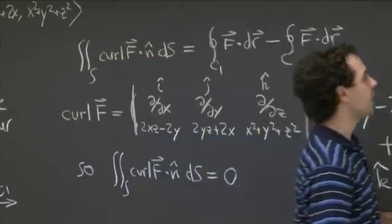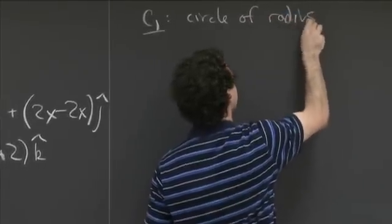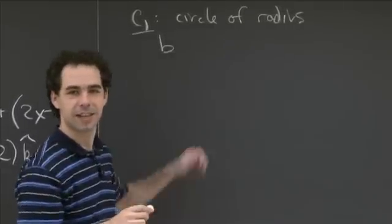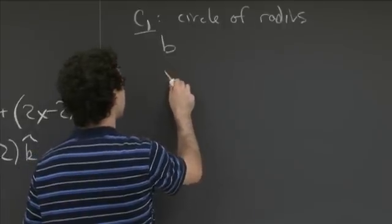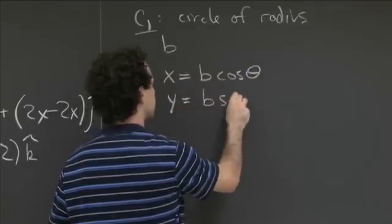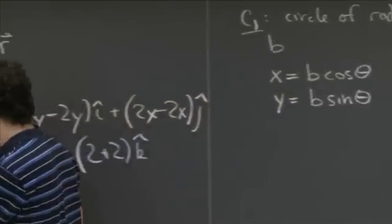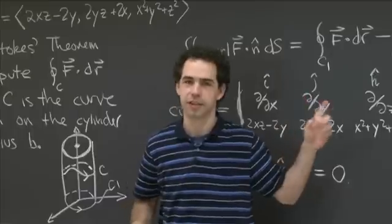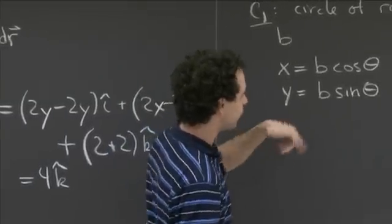c1 is the circle of radius b centered at the origin in the xy plane. It's parametrized by x equals b cosine theta, y equals b sine theta. We should check we're going the right direction — this parametrization goes counterclockwise in the xy plane, which is correct. We go once around, so theta runs from 0 to 2π.